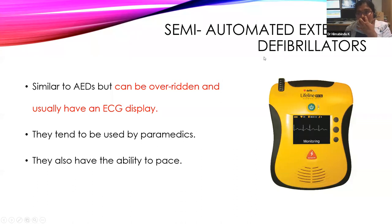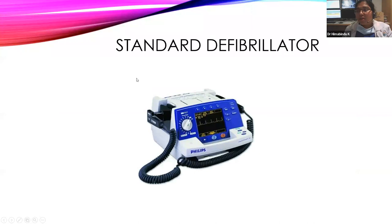The semi-automated external defibrillator is similar to the AED but can be overridden and usually has an ECG display — the paramedic can change energy or decide whether to shock. The standard defibrillator has two paddles, energy selection, charge button, shock button, and a synchronization option for cardioversion. There is also the implantable cardioverter-defibrillator (ICD), placed within the chest with leads in the atrium and ventricle for pacing plus defibrillation.